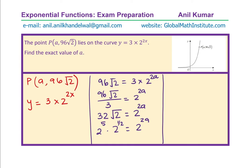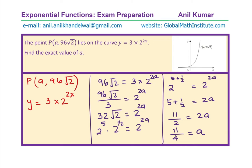Now we can solve for A. The left side is 2 to the power of 5 plus one half, which is 5 and a half, equal to 2 to the power of 2A. That clearly indicates that 5 plus one half should equal 2A. So, 11 over 2 equals 2A, giving us A equals 11 over 4. That is how you can find the value of A. It is important to see how we have written both sides to base 2 to simplify this particular question.